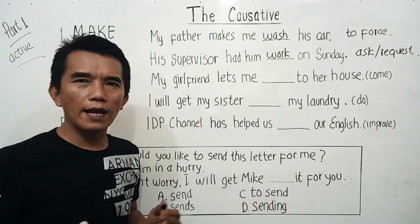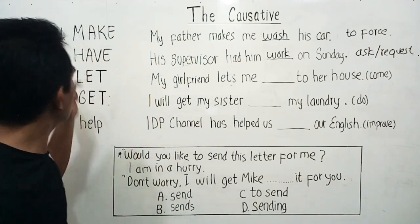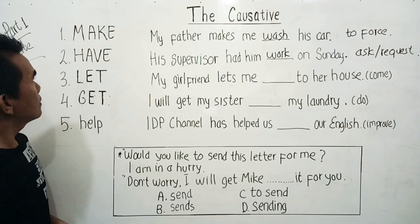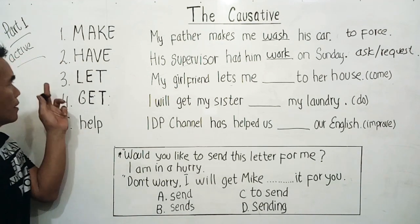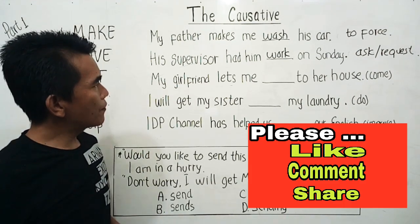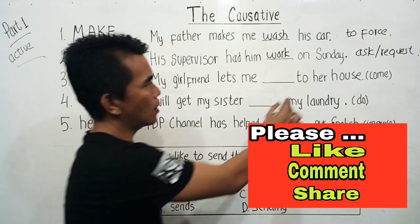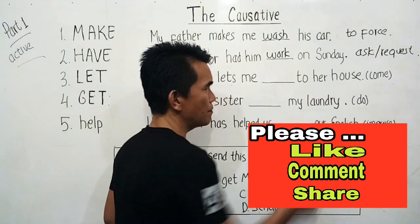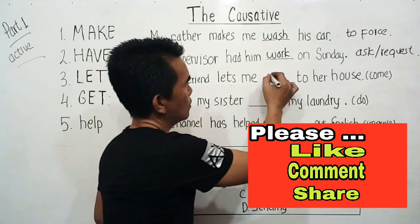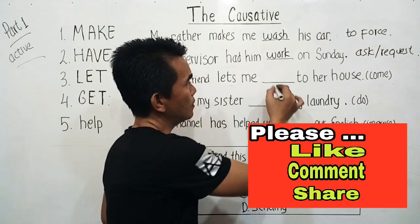Now, causative 'let': 'My girlfriend lets me ___ to her house.' The main verb is 'come,' so again here we also use the base form of the verb.